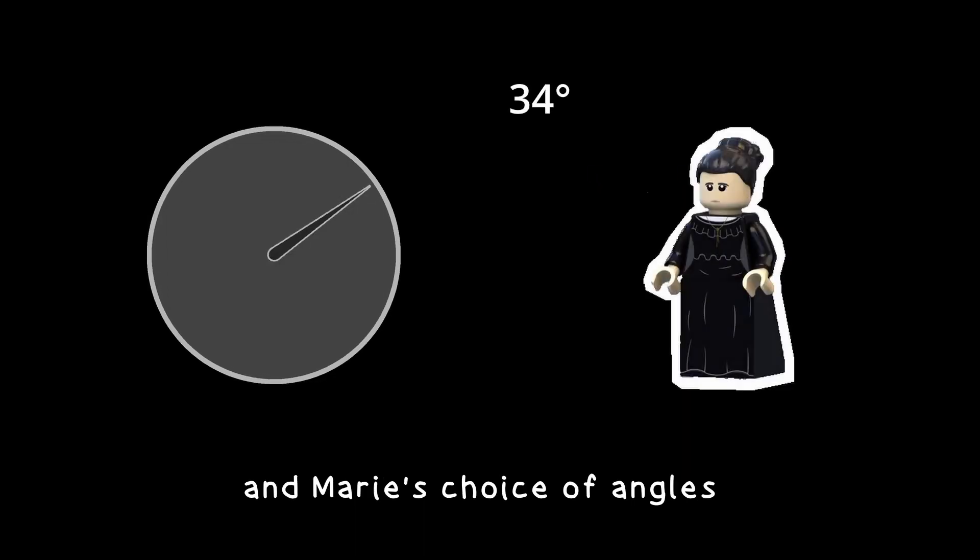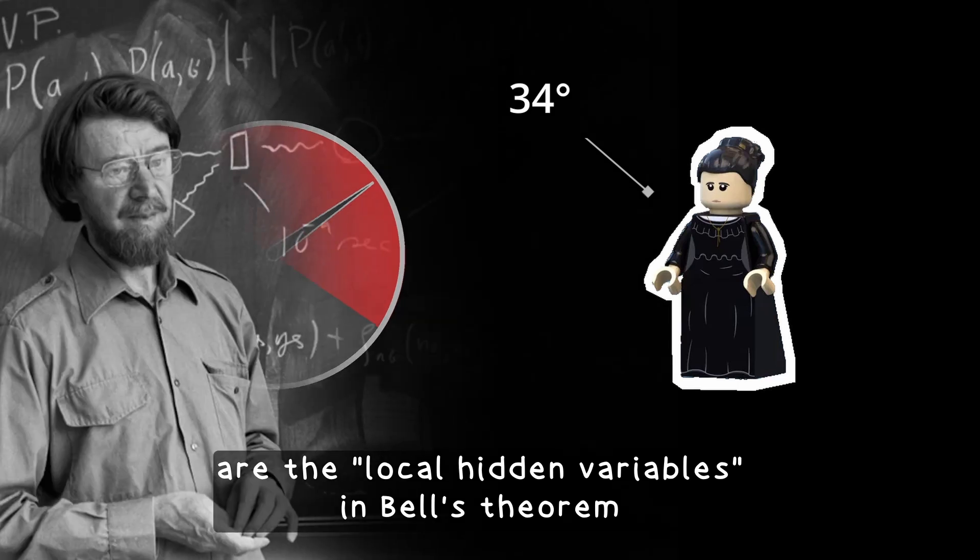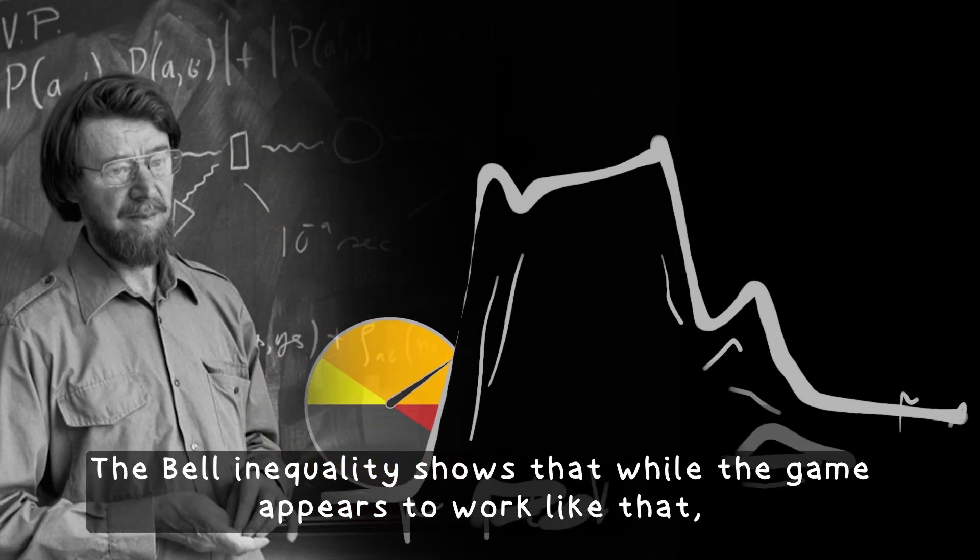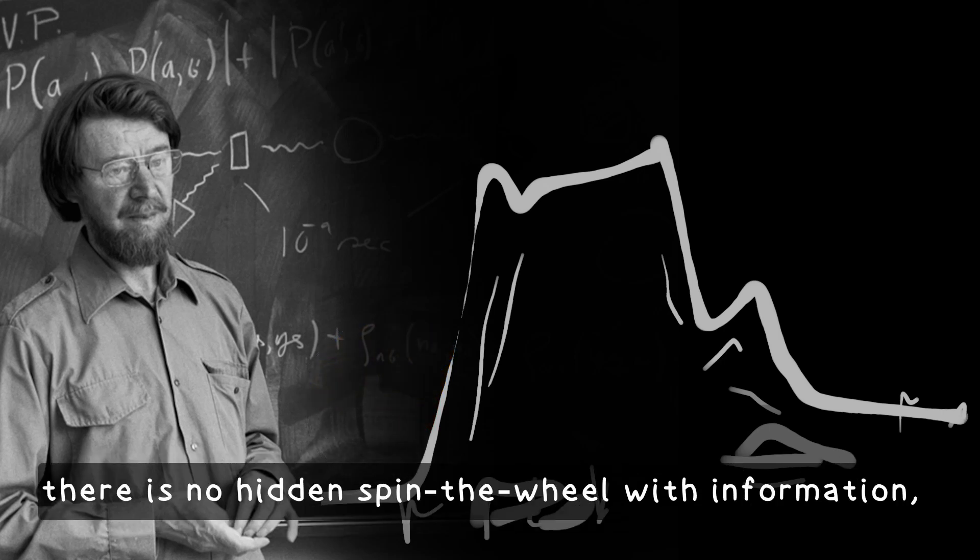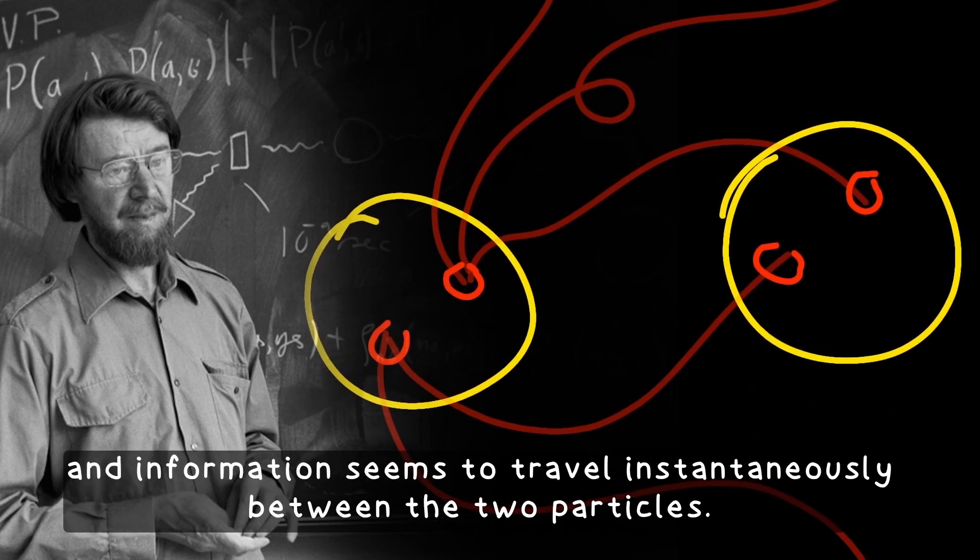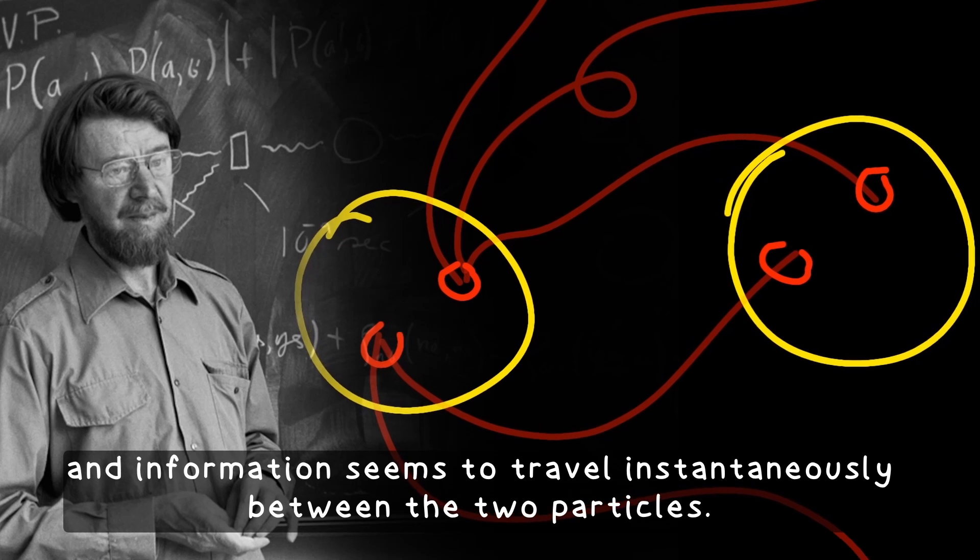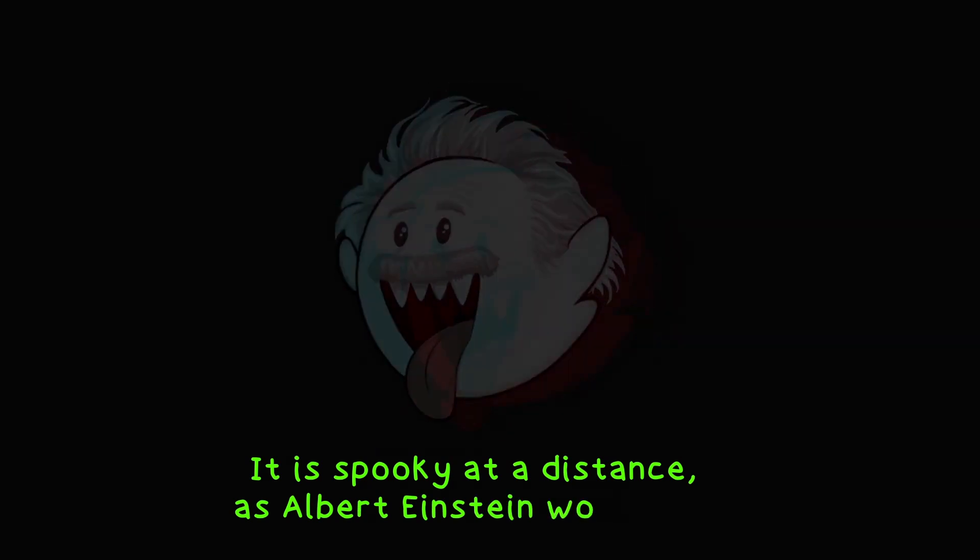The state of the spin-the-wheel toy and Marie's choice of angles are the local hidden variables in Bell's theorem. The Bell inequality shows that, while the game appears to work like that, there is no hidden spin-the-wheel with information, and information seems to travel instantaneously between the two particles. It is spooky at a distance, as Albert Einstein would say.